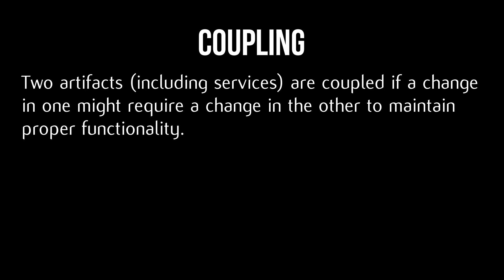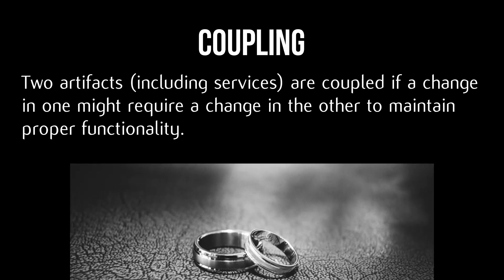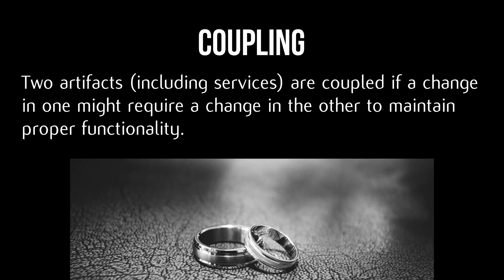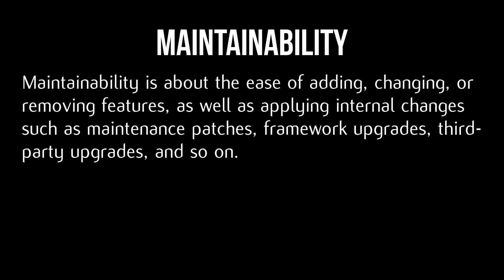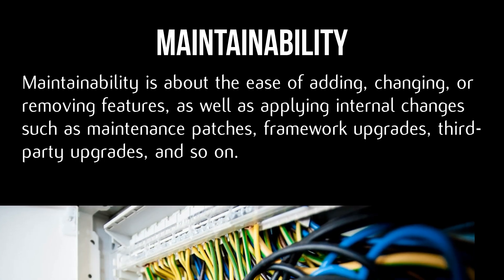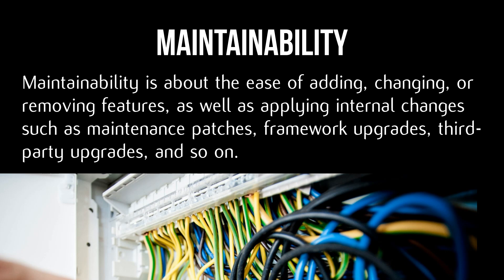Two artifacts are coupled if a change in one might require a change in the other to maintain proper functionality. Maintainability is about the ease of adding, changing, or removing features, as well as applying internal changes such as maintenance patches, framework upgrades, third-party upgrades, and so on.